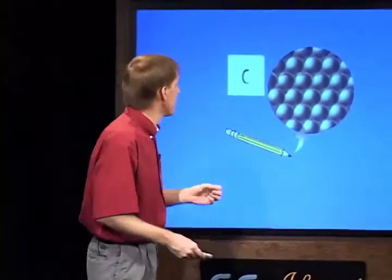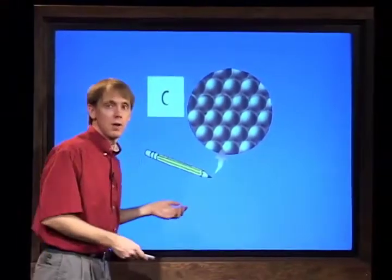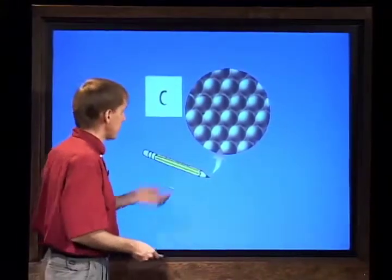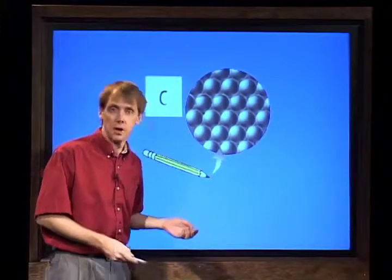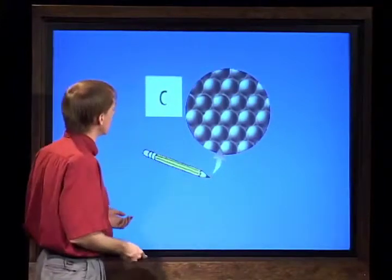We do not write with lead in our pencils — we use graphite. Graphite is an example of an element because it consists of only carbon atoms. Carbon is an example of an element, and graphite is a form of carbon.